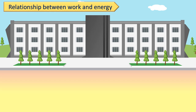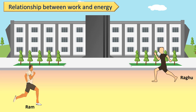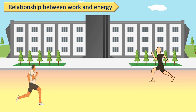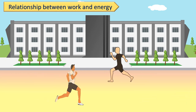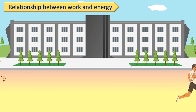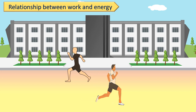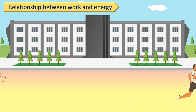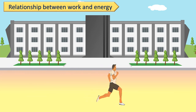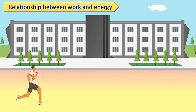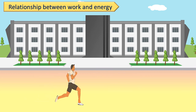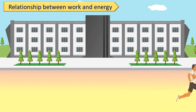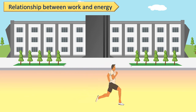Now, we will see how work and energy are related to each other. Suppose Ram and his friend Raghu both are practicing for a marathon race on the playground. Raghu completes 20 rounds of the playground and Ram completes 25 rounds. Who does more work? Ram completes 25 rounds, so he covers more distance than Raghu. Also, to complete 5 extra rounds, Ram used more energy than Raghu. Hence, we can say that Ram does more work than Raghu.